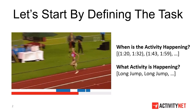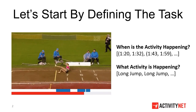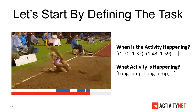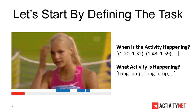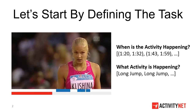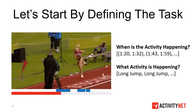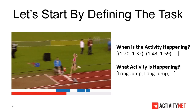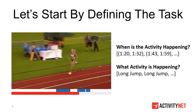As human beings, we can answer these questions easily. For example, given a video, we can say the activity is long jump, and the actor starts her activity from 120 to 132 seconds, then has the same activity from 143 to 159 seconds, and so on. However, this question is not so easy to answer by an intelligent system.